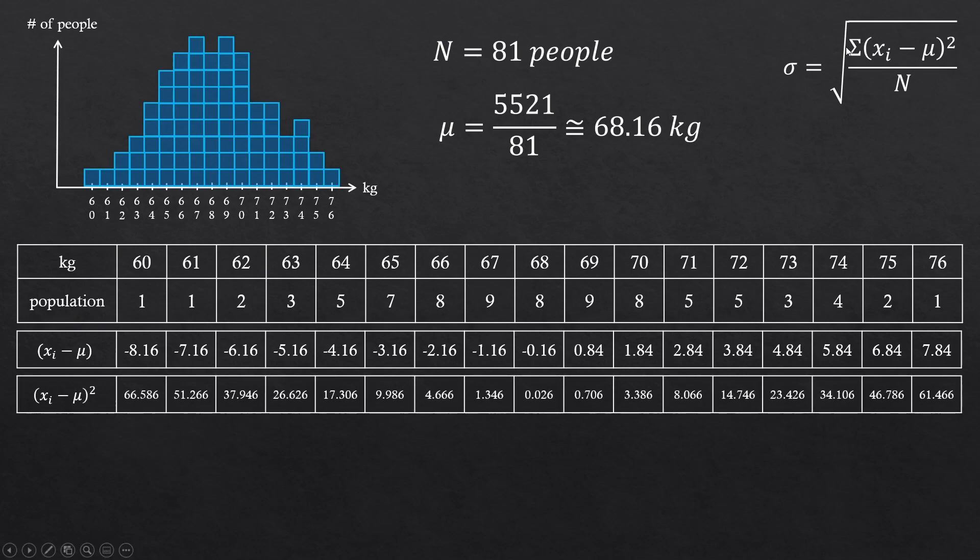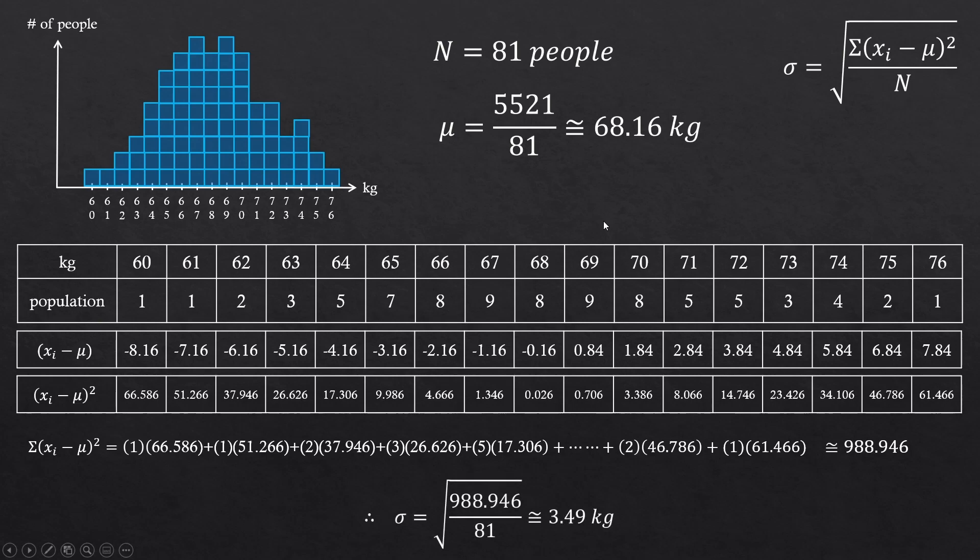Now we have a sigma here, so we should add all the numbers. But of course, each bin has a different amount, I mean different populations. So we'll have to multiply by number of people, then add them all, which gives about 988.946. You can check if you get the same answer. Lastly, we gotta divide by the total amount, then square root it. I got this standard deviation of 3.49 kilograms.